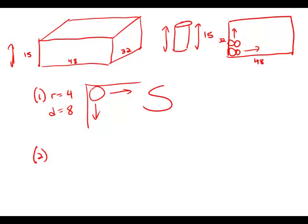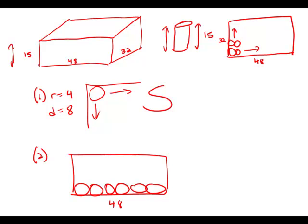Statement number two tells us that six cans fit exactly along the length. So this length is 48, and we have, forgive my bad art here, six cans fit exactly along the length. That means that six diameters equal 48, which means that the diameter equals 8 and the radius equals 4.